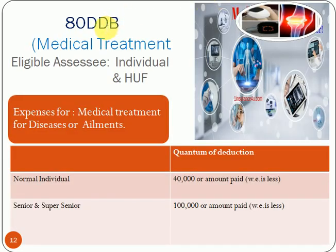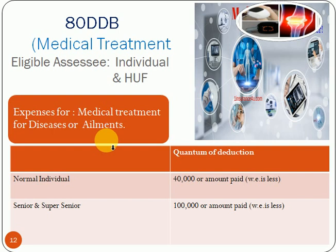Next is deduction under Section 80DDB, for medical treatment. If an individual spends money for medical treatment for specific diseases or ailments, then he can claim it as a deduction under Section 80DDB. The eligible assessee is also individual and HUF both. The quantum of deduction is limited to Rs. 40,000 in case of a normal individual, and Rs. 1,00,000 in case of senior or super senior citizens, or the actual amount paid, whichever is less.